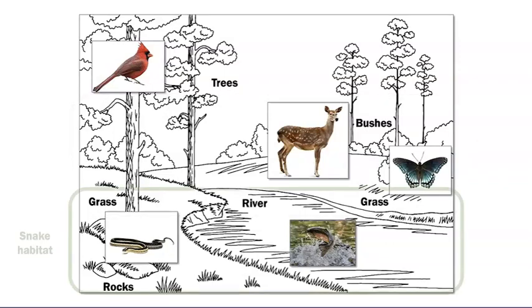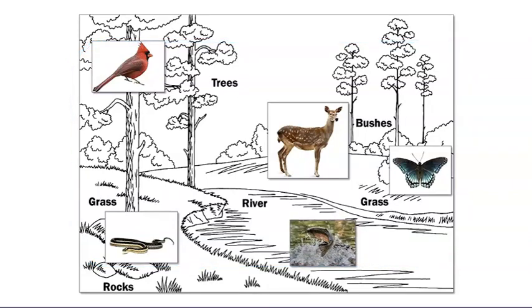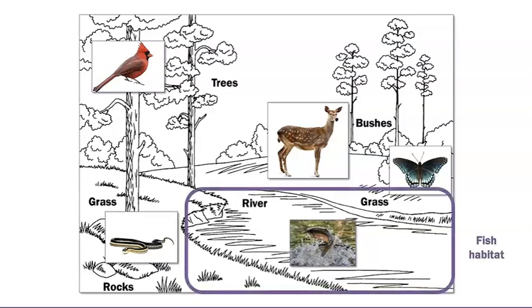The snake's habitat includes the rocks where it hides and the ground where it finds food. And what about the butterfly? The butterfly's habitat includes the plants, where it gets food, and the air where it flies. Now we've reached the last animal. What is the fish's habitat? The fish's habitat includes the river, where it can swim and find food.